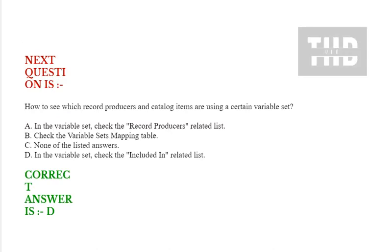How to see which record producers and catalog items are using a certain variable set? Option A: in the variable set, check the record producers related list. Option B: check the variable sets mapping table. Option C: none of the listed answers. Option D: in the variable set, check the included in related list. Correct answer is option D.